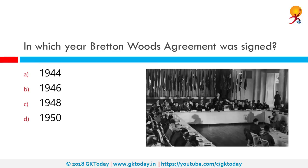In which year was the Bretton Woods Agreement signed? The Bretton Woods Agreement is the landmark system for monetary and exchange rate management established in 1944. It was developed at the United Nations Monetary and Financial Conference held at Bretton Woods, New Hampshire, from July 1st to July 22nd, 1944.